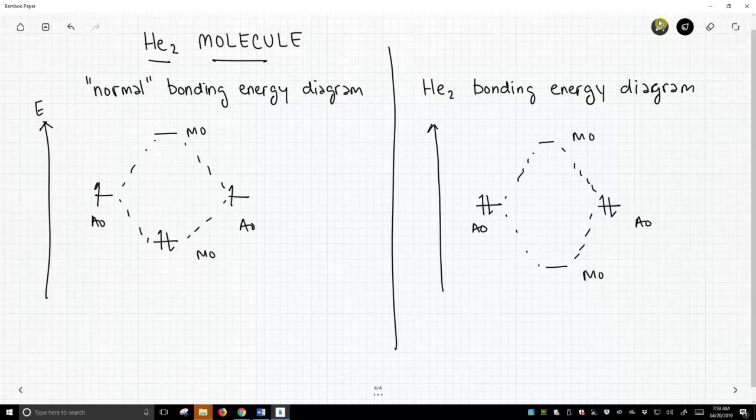We can only put two electrons in an orbital. So two electrons go down, two electrons go up, so our bonding orbital is filled and our anti-bonding orbital is filled.